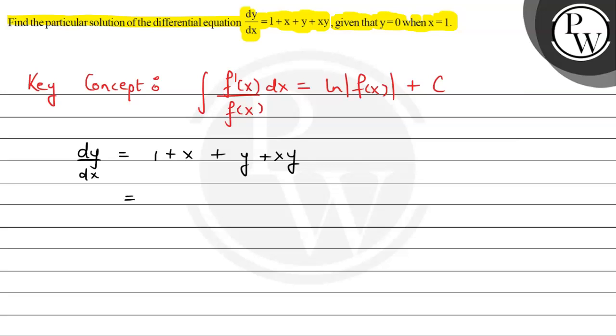Here we can simplify: we have 1 + x + y(1 + x). Now we can take (1 + x) common, so (1 + x)(1 + y).